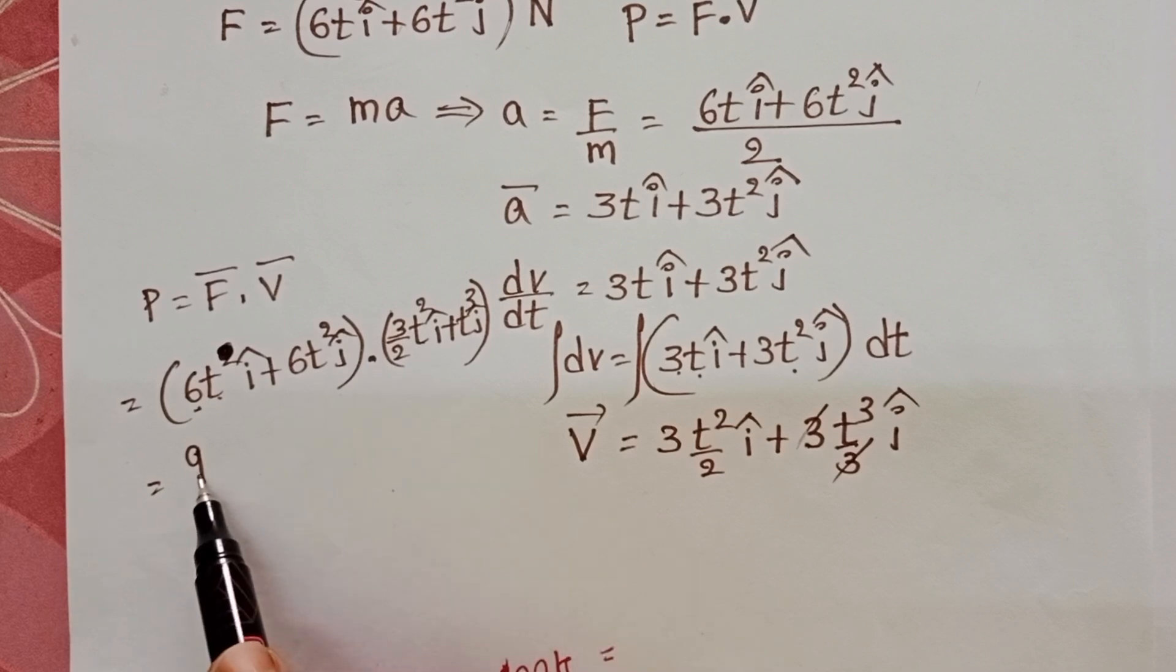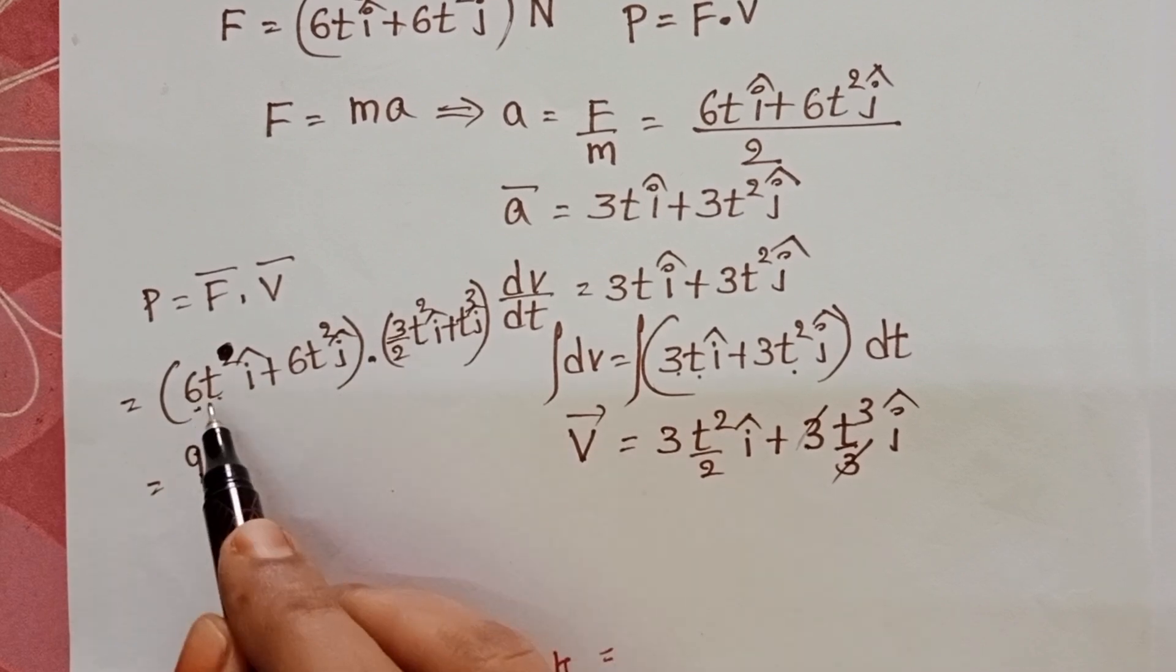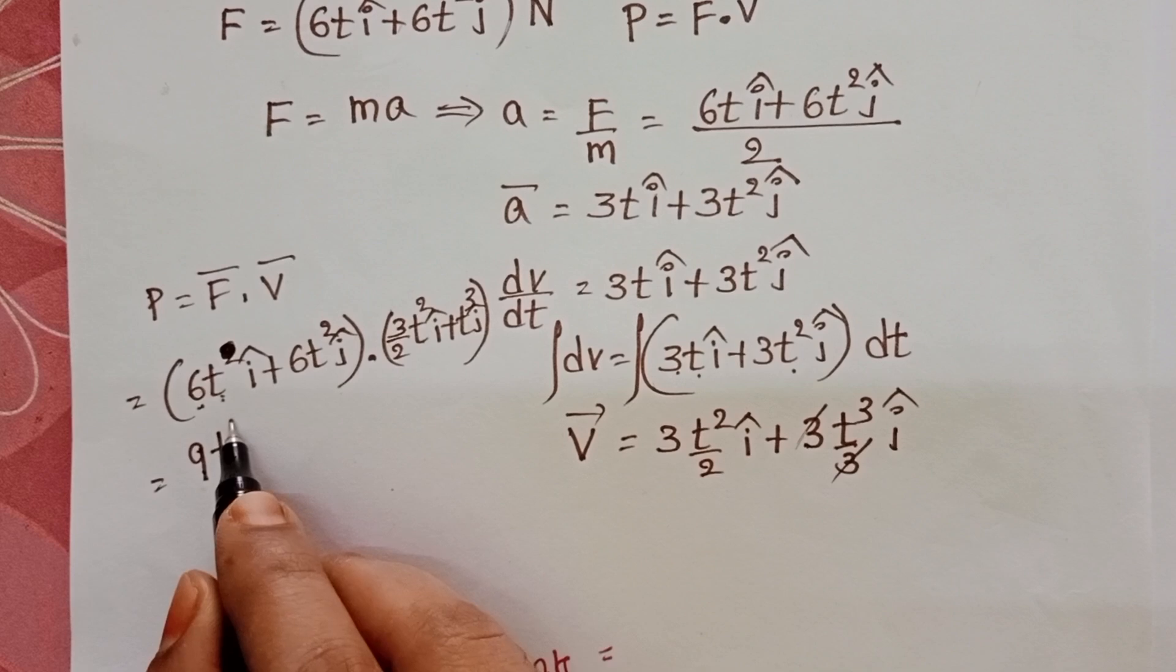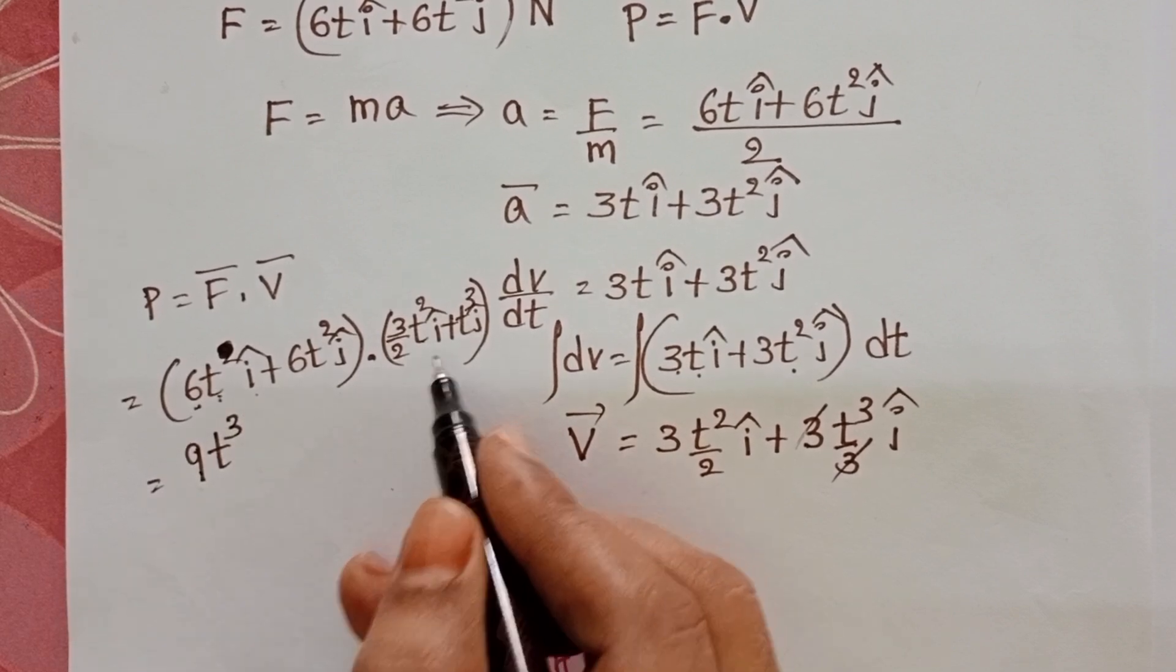6 times 3/2 equals 9. t times t² equals t³. î dot î equals 1.